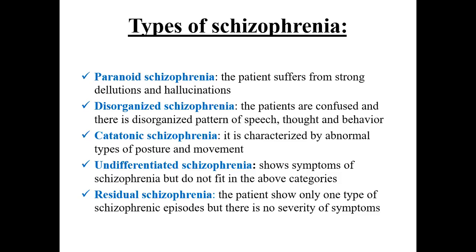The second type is Disorganized Schizophrenia, which usually develops when patients are 15 to 25 years old. Symptoms include disorganized behaviours, thoughts, short-lasting delusions and hallucinations. Patients may have disorganized speech patterns that others find difficult to understand. People with disorganized Schizophrenia often show little or no emotion in their facial expressions, voice tone or mannerisms, and at times they have inappropriate emotional responses, such as laughing at something sad.